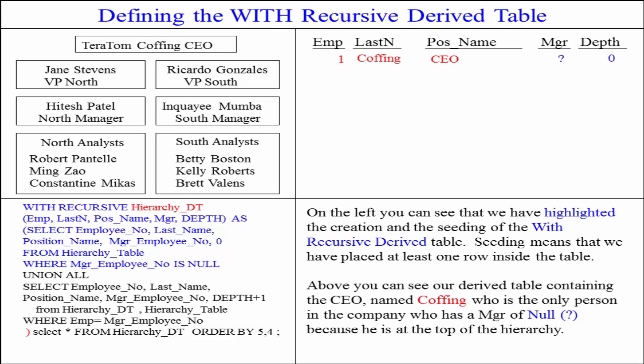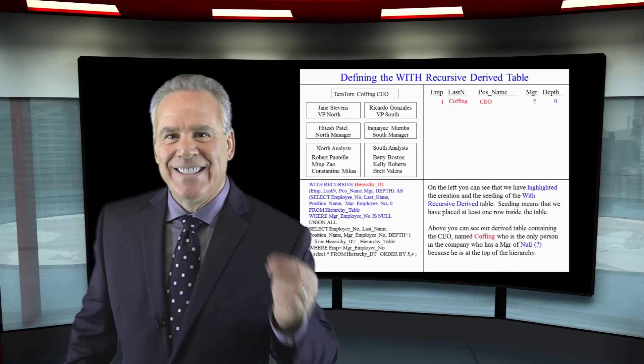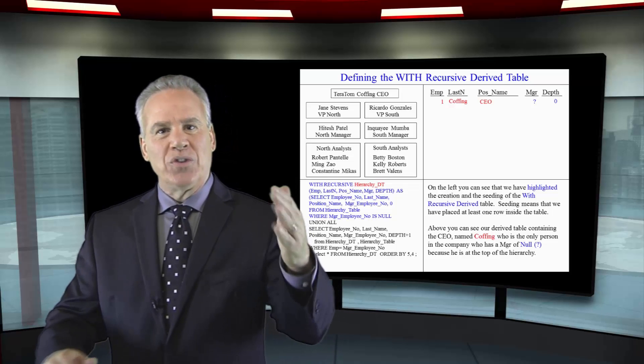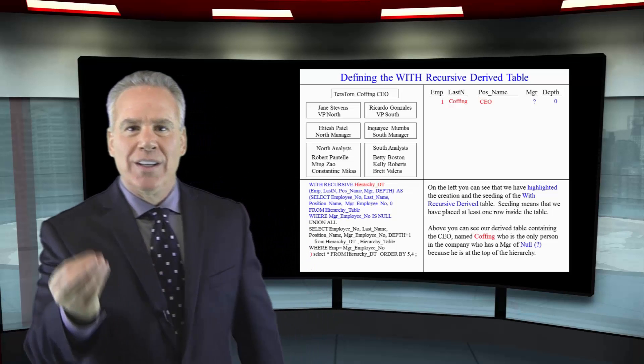Depth is actually a keyword. I've listed my columns separated by commas. To seed the table, I want to select the columns from the real hierarchy table where the manager number is null. Tara Tom is the only person without a manager number because he's the CEO — people report to him. So there's only one row placed in the derived table right now, and that's called seeding the derived table. Next we'll see how it loops and joins the rows to Tara Tom.